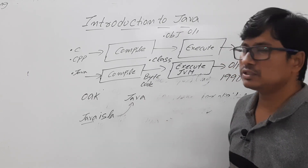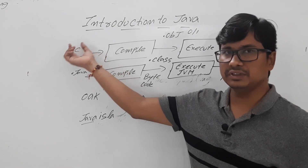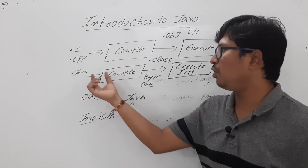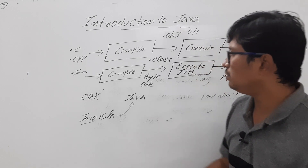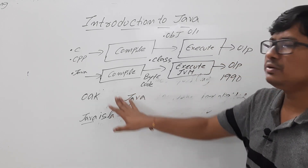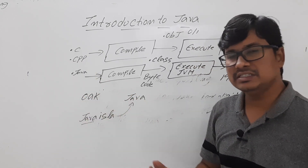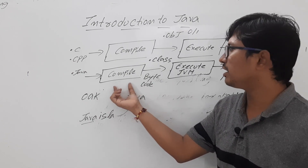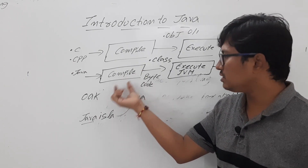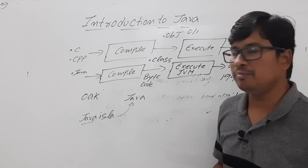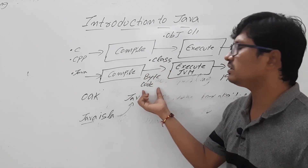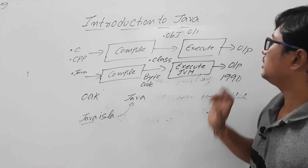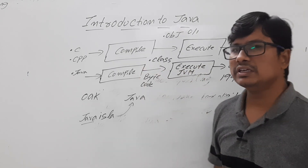To summarize: the limitations of C and C++ have been overcome in Java. To work with Java, you need to install the JDK — Java Development Kit. Once installed, you can write Java programs, which generate Java bytecode and produce the output.